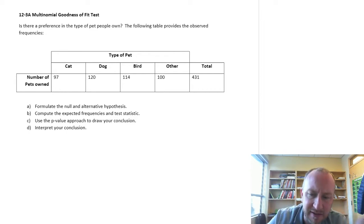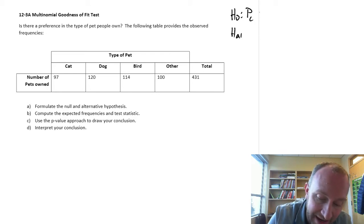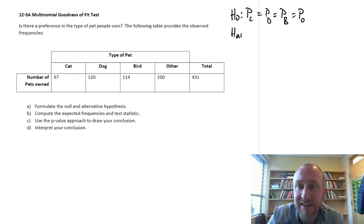We want to test to see, do we have evidence to show that this data follows a multinomial probability distribution? Our null hypothesis is that the proportion of people who have a cat is equal to the proportion of people with a dog, the proportion of people with a bird, and the proportion of people with something else.